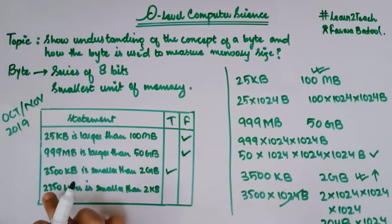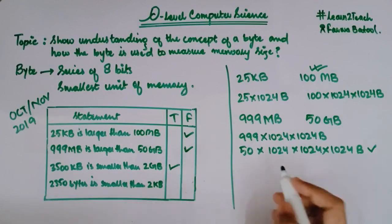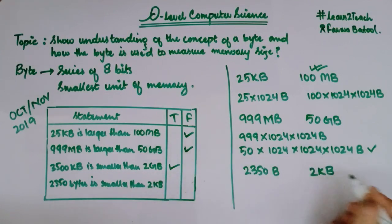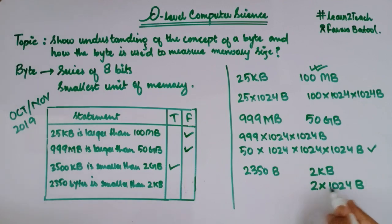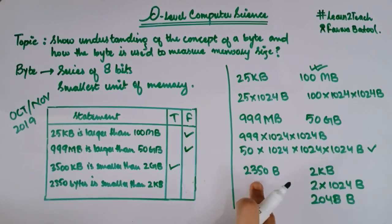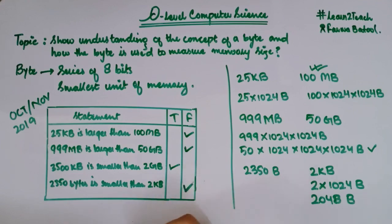The last statement: 2350 bytes is smaller than 2 KB. Converting 2 KB to bytes: 2 × 1024 = 2048 bytes. Now comparing: is 2048 greater than 2350? No — 2350 is bigger than 2048. The statement says 2350 bytes is smaller than 2 KB, but in fact 2350 bytes is greater than 2 KB, which is only 2048 bytes. So this is a false statement.